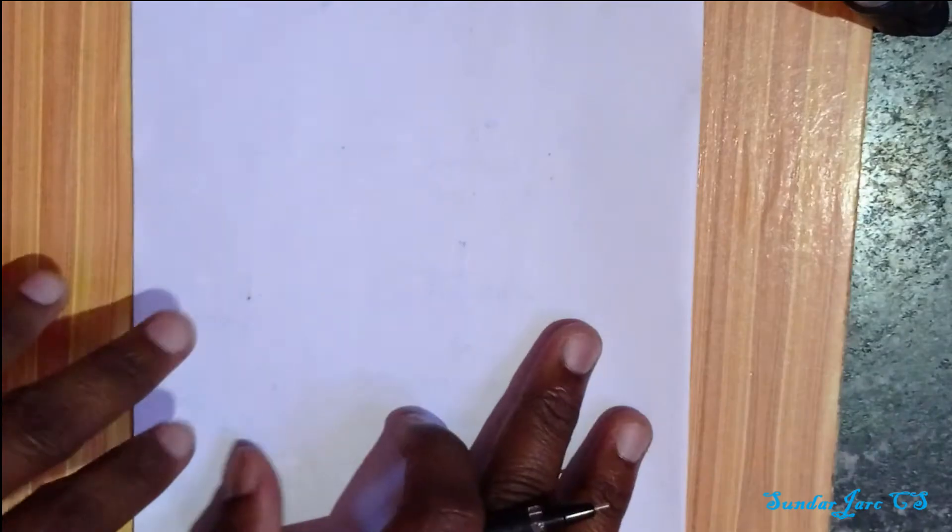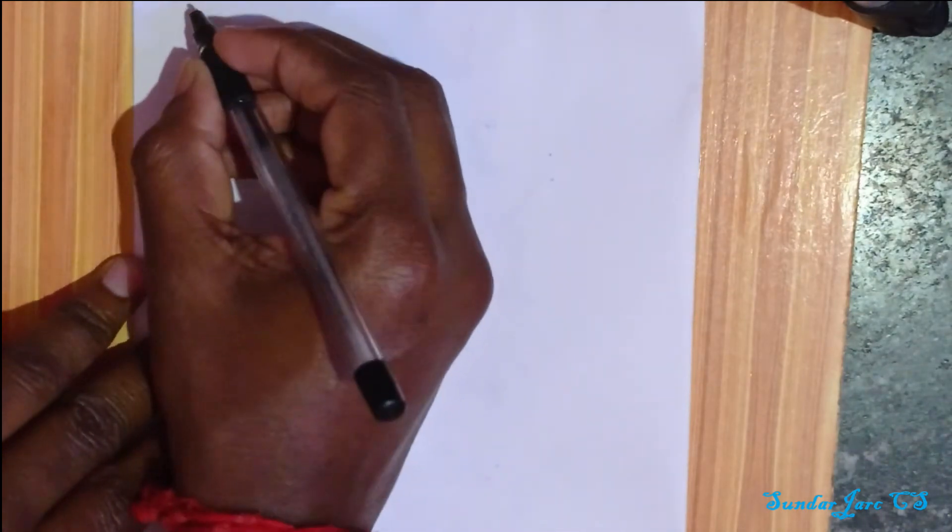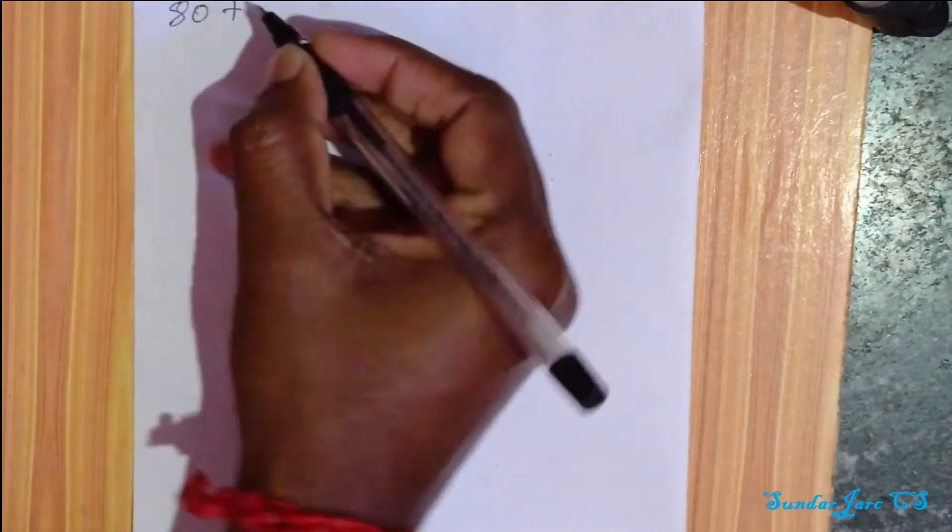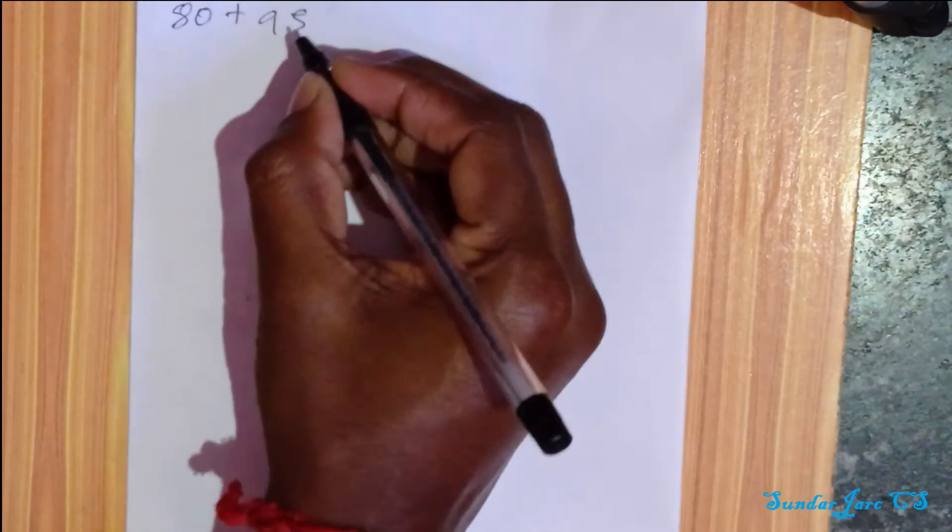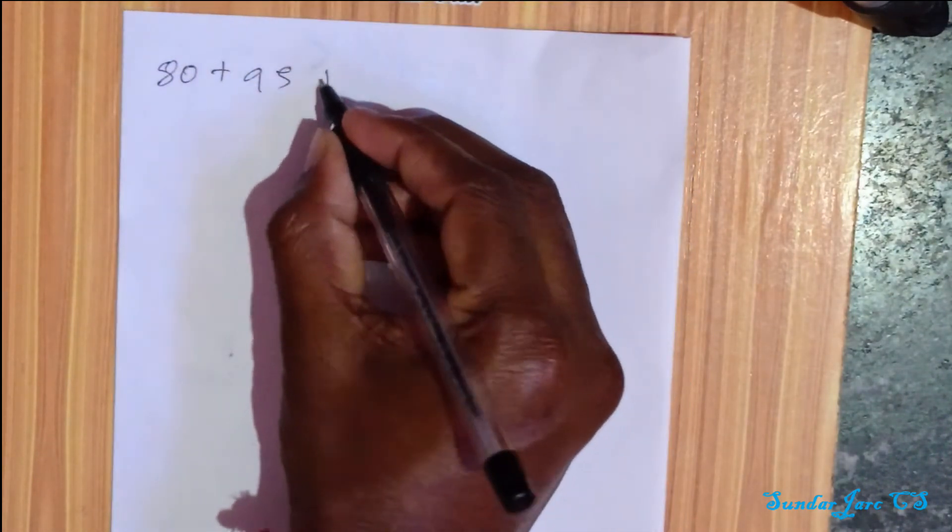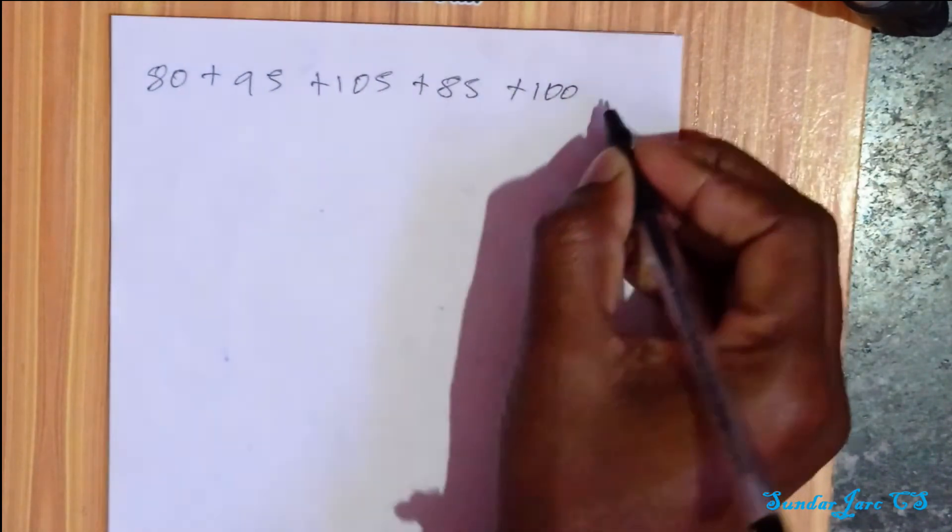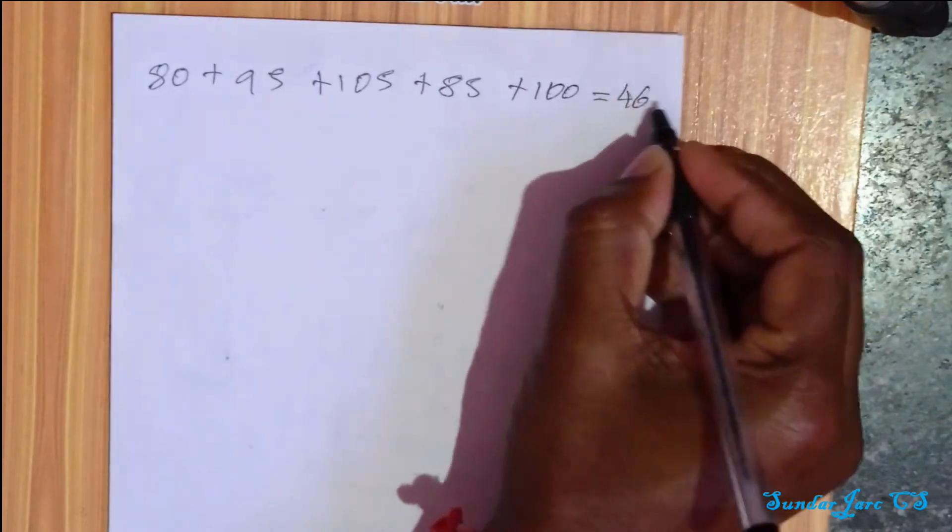To add taxes: 80 plus 95 plus 105 plus 85 plus 100 equals 465.